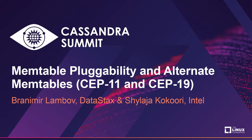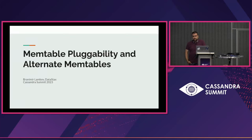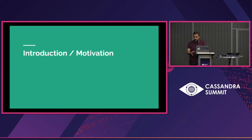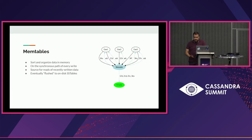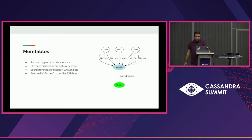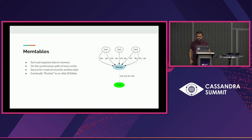The talk is about memtable pluggability and the alternate memtable implementations we have in Cassandra 5. Let's start with why we want to do anything about memtables at all. The memtable is a very important piece of Cassandra's local storage — it's the first place where every piece of data goes before being reorganized and written into SSTables. It takes data from the user, organizes it for retrieval, and prepares it for flushing into an SSTable. In this example, we have some writes happening, a read by user 3, and something being flushed into an SSTable.